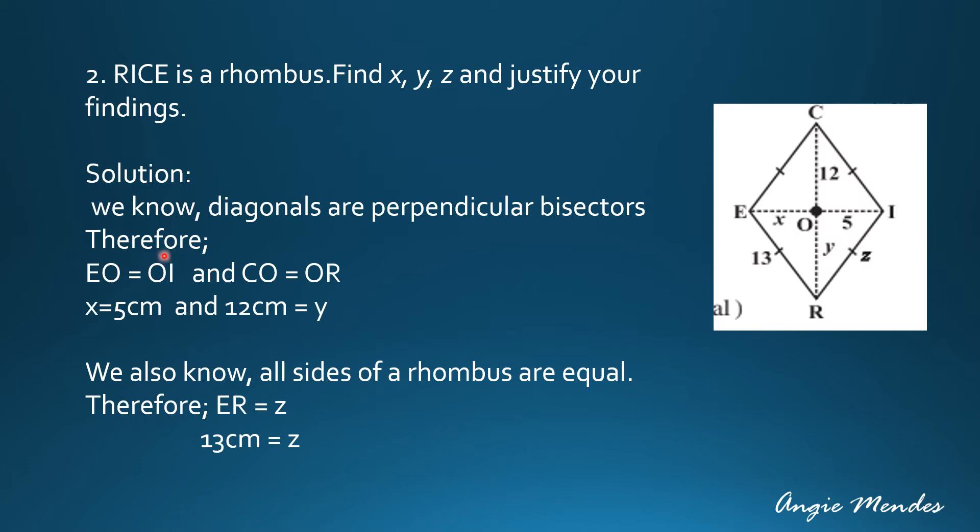In this example we are given R, I, C, E is a rhombus. Find x, y and z. Now we know that the diagonals are perpendicular bisectors of each other. X is EO and it is part of the diagonal EI. Since they are perpendicular bisectors, EO is equal to OI and CO will be equal to OR.